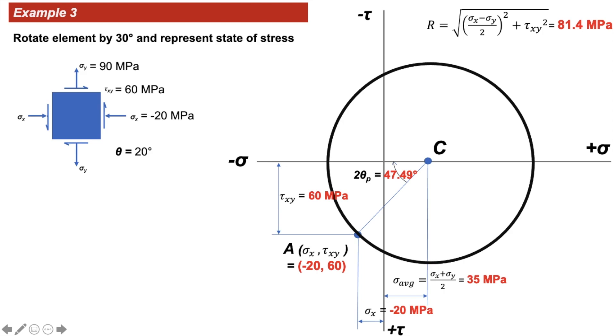From the previous examples, we have already constructed the Mohr circle. We calculated σavg, found the value of the radius, and so on.